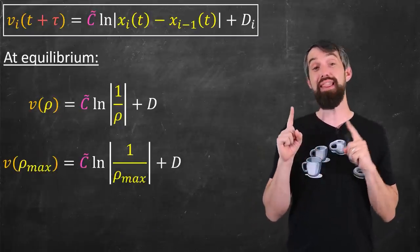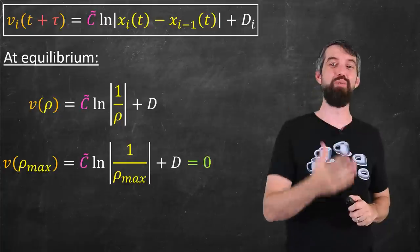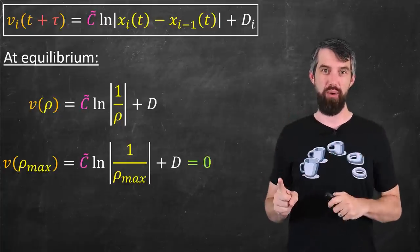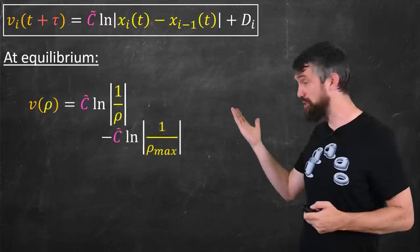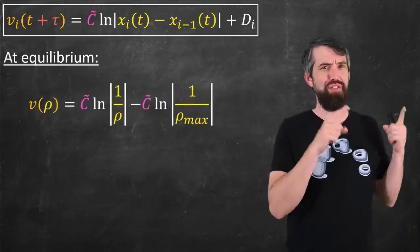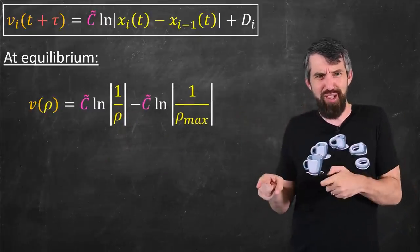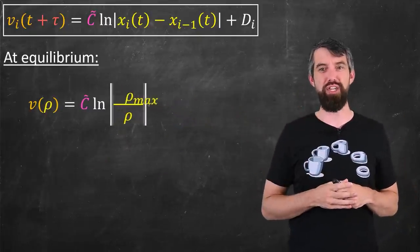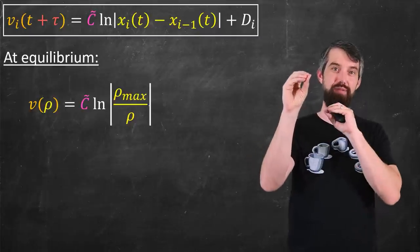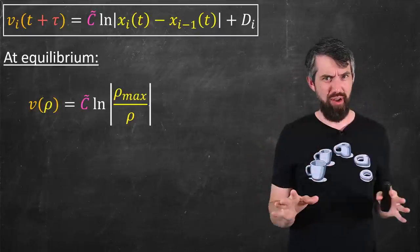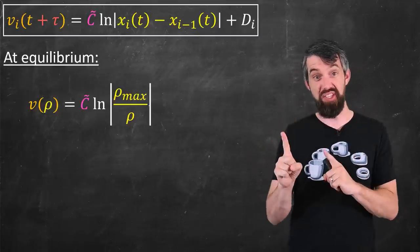Let's just plug this in. First, I'll evaluate at the maximum density. This is where my velocity is zero. If I choose to isolate for d, I get an expression. I'll substitute my expression in. I have the difference of two logarithms, which is the logarithm of a quotient. And with a little bit of algebra, we get c times the logarithm of ρ_max divided by ρ. So I've figured out the d.